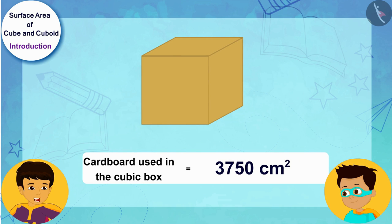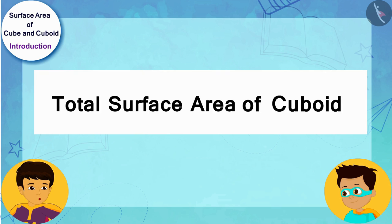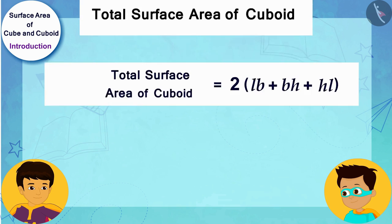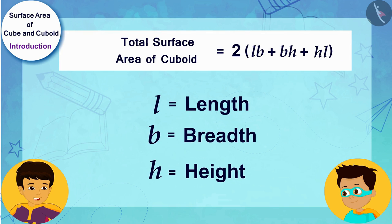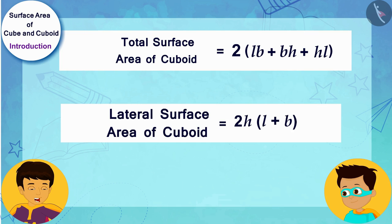Hey wow, now it's my turn. We have studied that the total surface area of a cuboid can be determined by multiplying the sum of L times B, B times H and H times L by 2, where L, B and H are the length, breadth and height of the cuboid respectively. And the lateral surface area of the cuboid can be determined by multiplying the sum of L and B by 2 times the height, H.